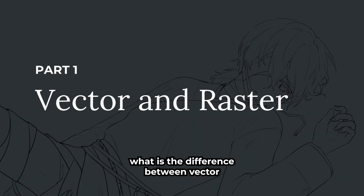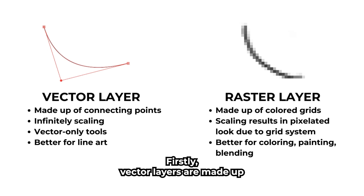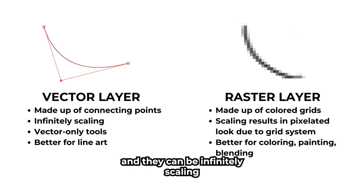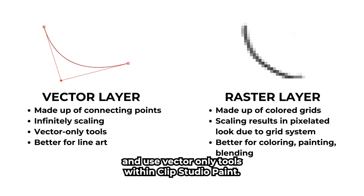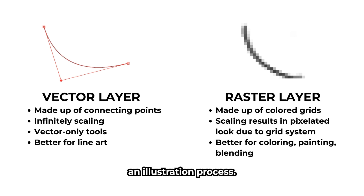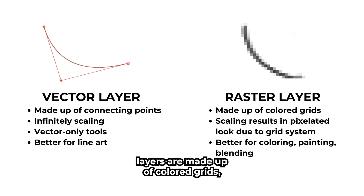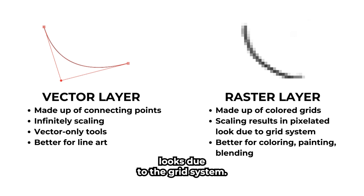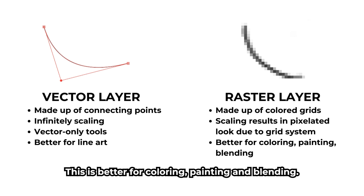Let's begin with what is the difference between vector and raster layers in Clip Studio Paint. Vector layers are made up of connecting points, lines, and polygons, and they can be infinitely scaled and use vector-only tools. This is better for line art in an illustration process. Meanwhile, raster layers are made up of colored grids, and scaling results in pixelated looks due to the grid system. This is better for coloring, painting, and blending.